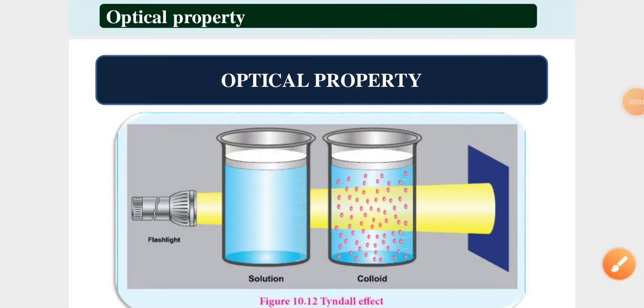Welcome students, this is chemistry class — 12th standard chemistry. Unit 10, surface chemistry. In Unit 10, we will look at the properties of colloids.